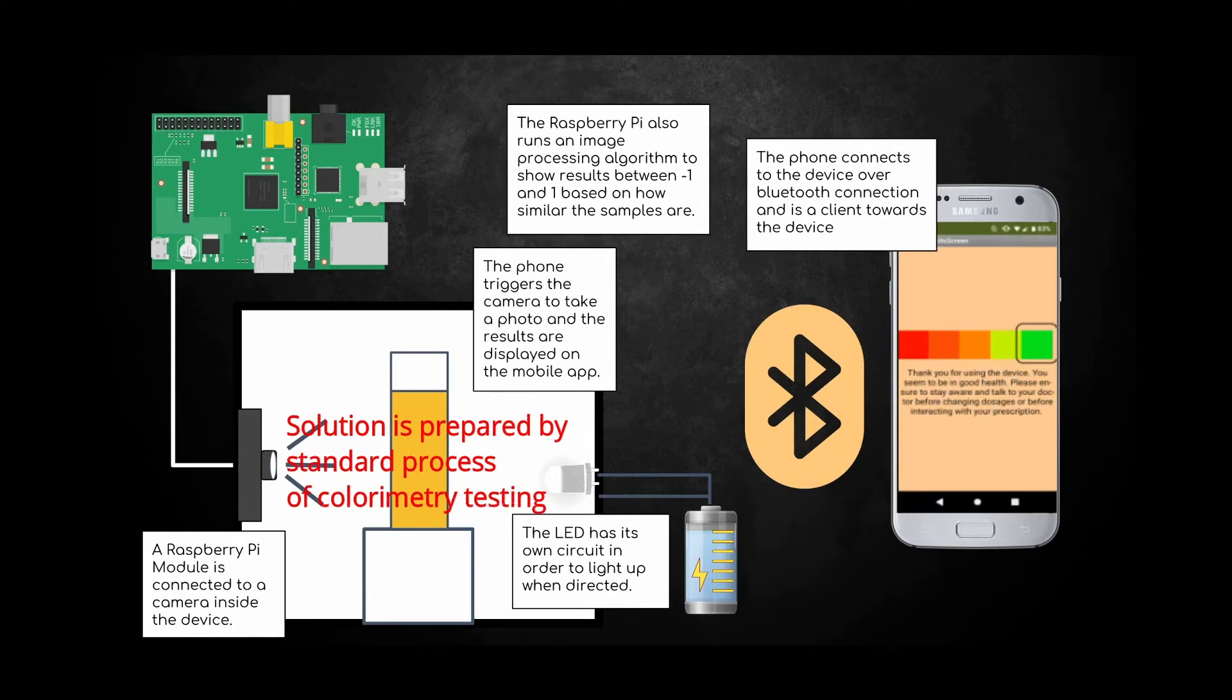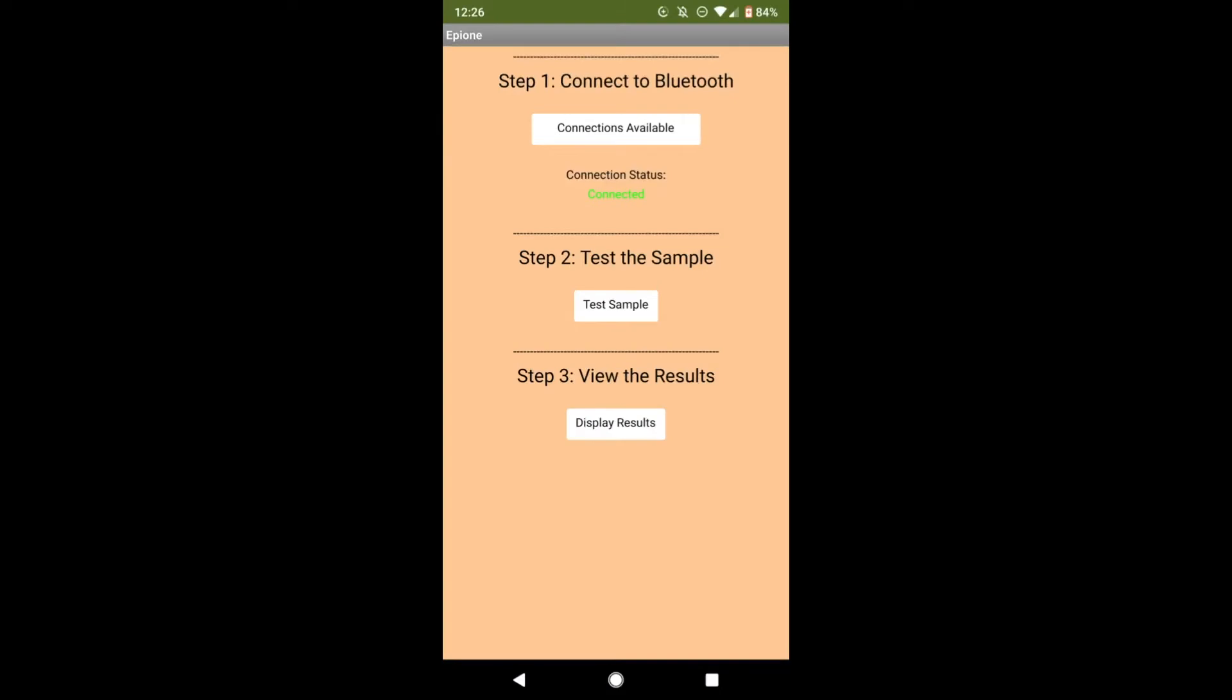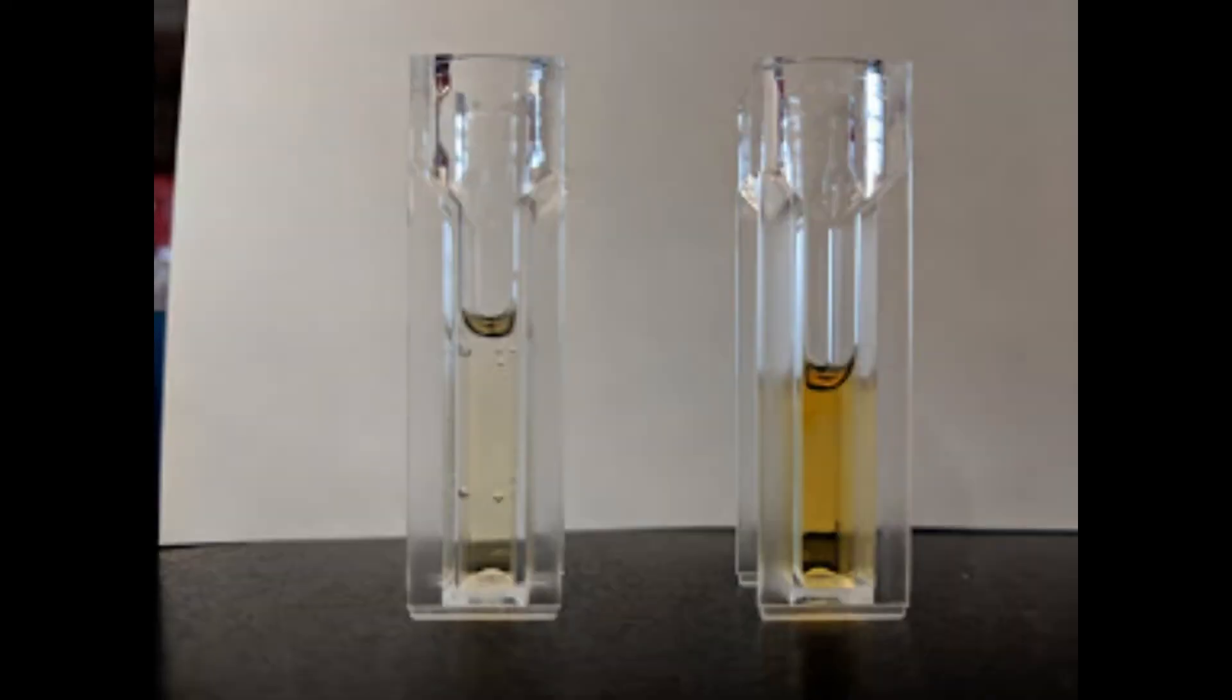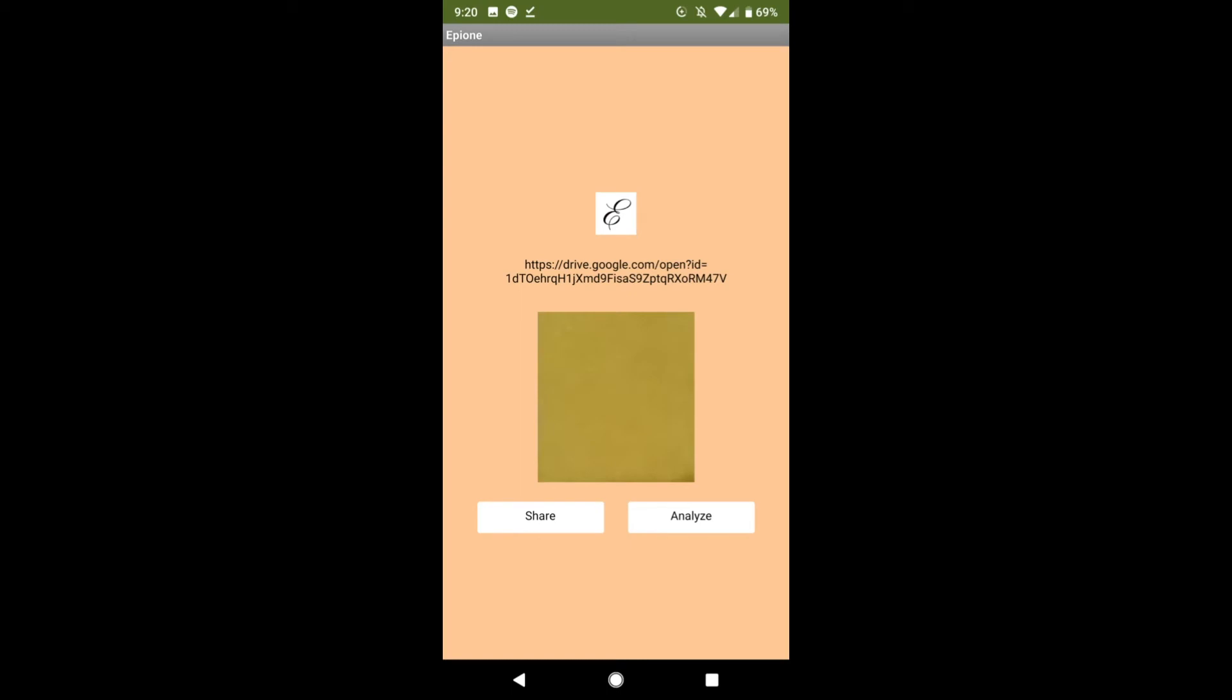And lastly, a custom Android app on a smartphone that controls the device components. When Test Sample is clicked on the app, the Raspberry Pi takes a high-resolution picture of a cuvette with the sample and sends it back to the mobile app. The app then saves and displays the image.